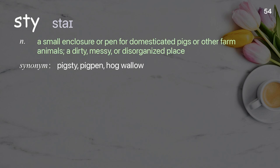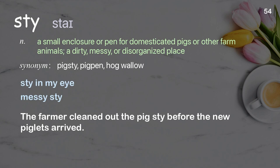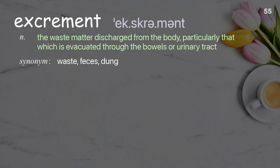Stye: A small enclosure or pen for domesticated pigs or other farm animals; a dirty, messy, or disorganized place. Examples: stye in my eye, messy stye. The farmer cleaned out the pig stye before the new piglets arrived.